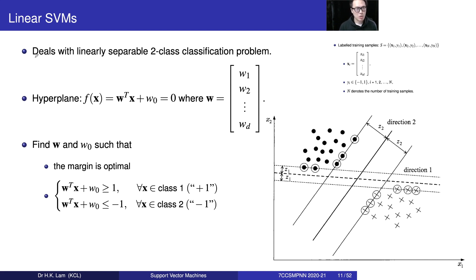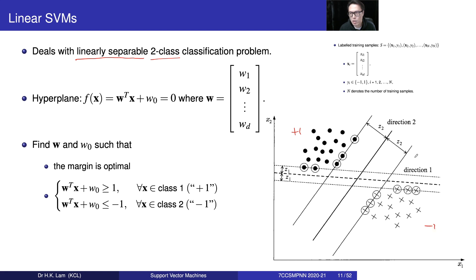This is the problem we are dealing with. We are going to have a dataset that is linearly separable. The classification problem has two cases — plus one and minus one. We have a function, a hyperplane, which can separate these two cases 100% correctly. This is the hyperplane.